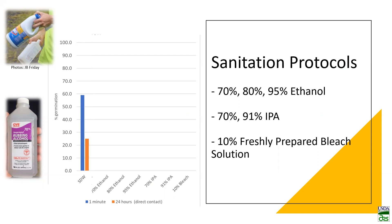These sanitation products are effective for tools, shoes, and even hands, with 70% IPA being especially easy to find.